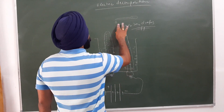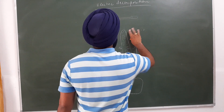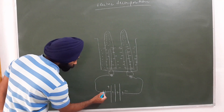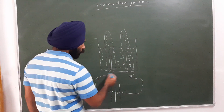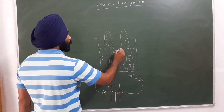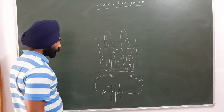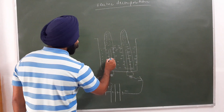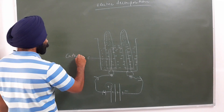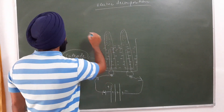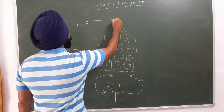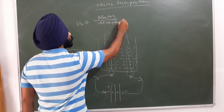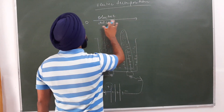An important question: why are drops of H2SO4 added to distilled water before electrolysis? When we pass electric current through water (H2O), electric decomposition starts. Water molecules have H+ (positive) and O2- (negative) ions. The positive H+ ions move toward the negative terminal (cathode) and the negative O2- ions move toward the positive terminal (anode).